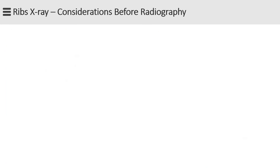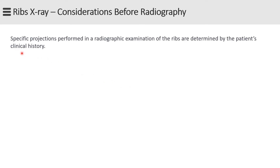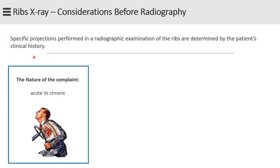The projections to be performed in a ribs examination are determined by the patient history. If the history is not provided by the physician, you must obtain a complete clinical history that includes: first, the nature of the complaint — is it acute or chronic, and how the injury occurred? Is it caused by trauma or is chronic pain caused by underlying disease?